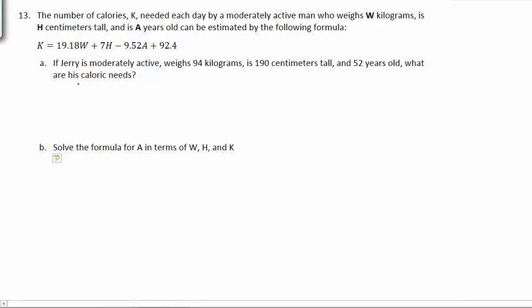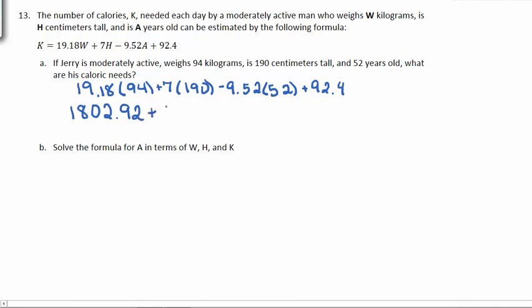Well, we just stick things in. 19.18 times his weight, which is 94, plus 7 times his height, which is 190, minus 9.52 times his age, which is 52, plus 92.4. So the first step is always the multiplication. This gives 1,802.92, plus 1,330, minus 495.04, plus 92.4.